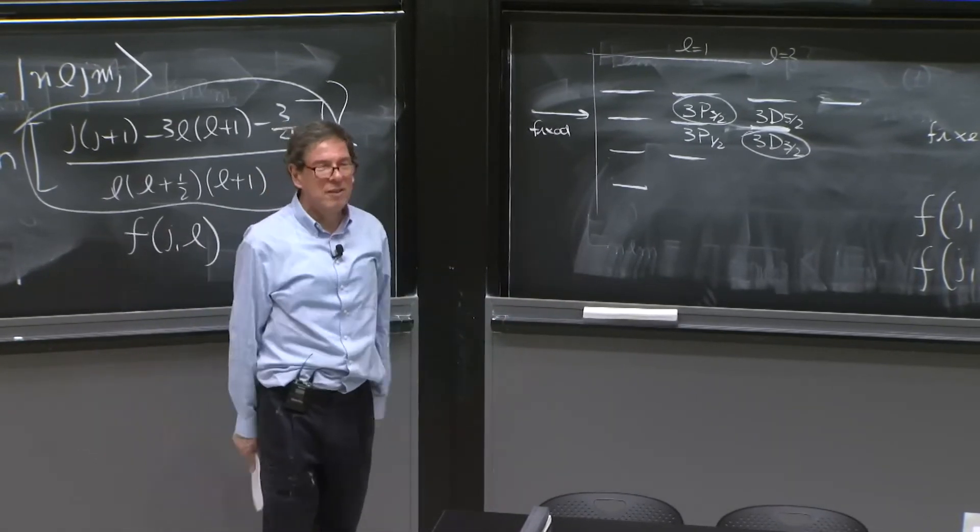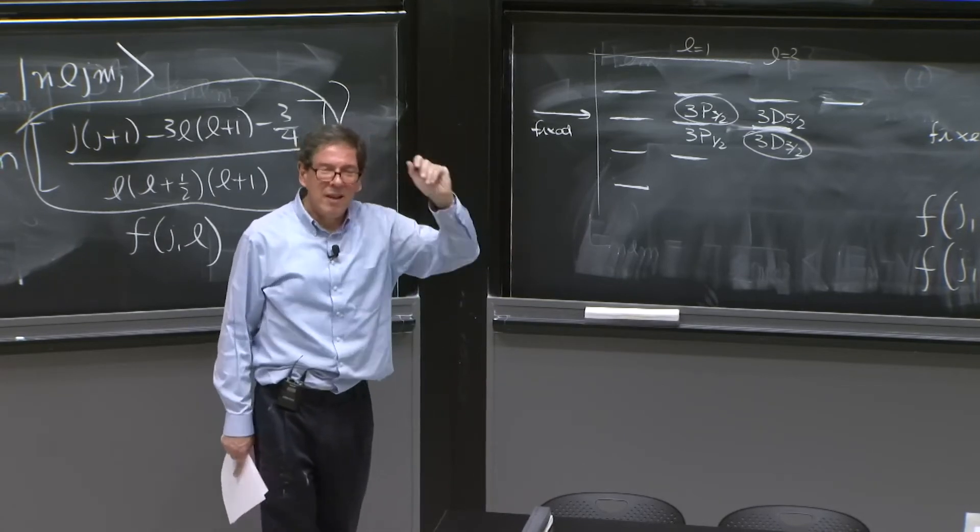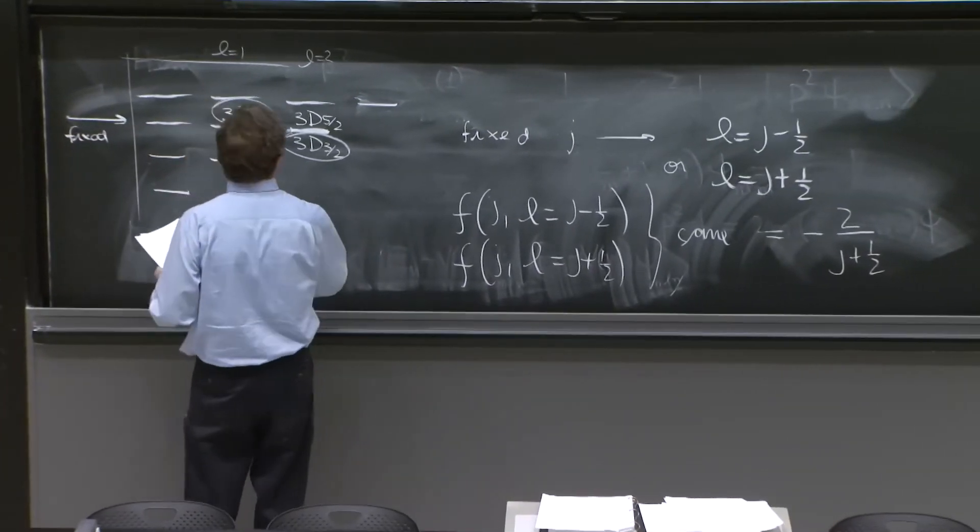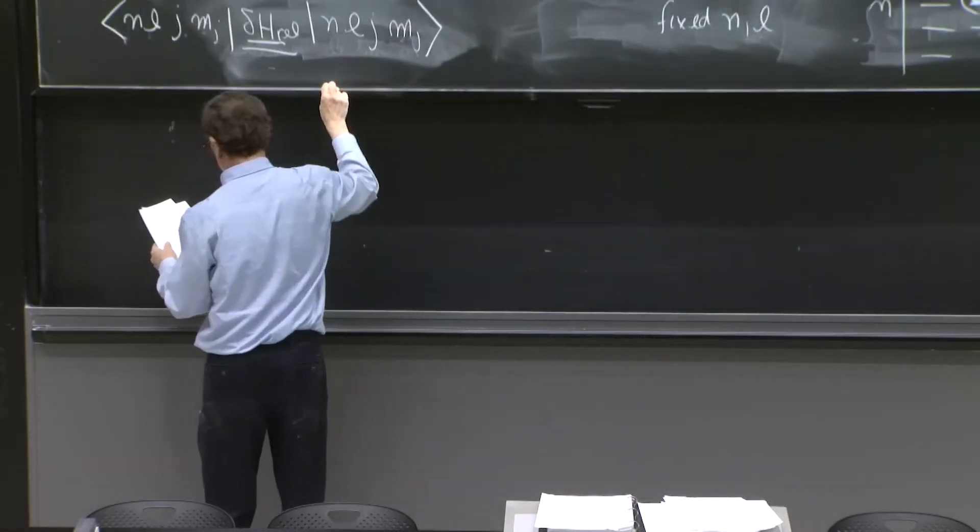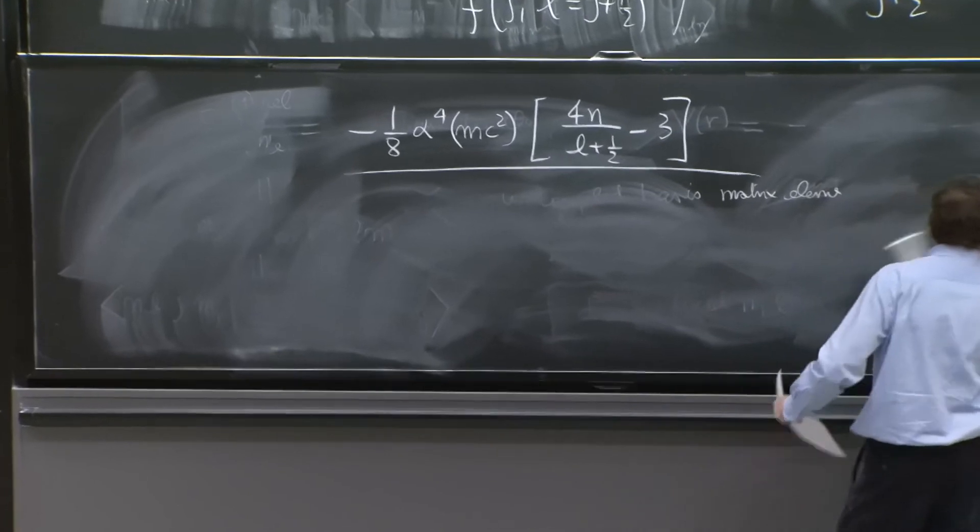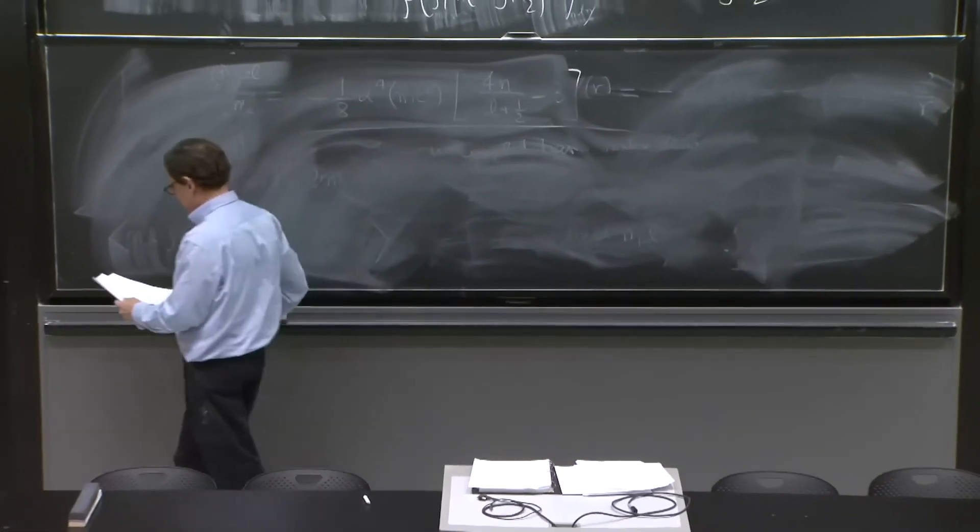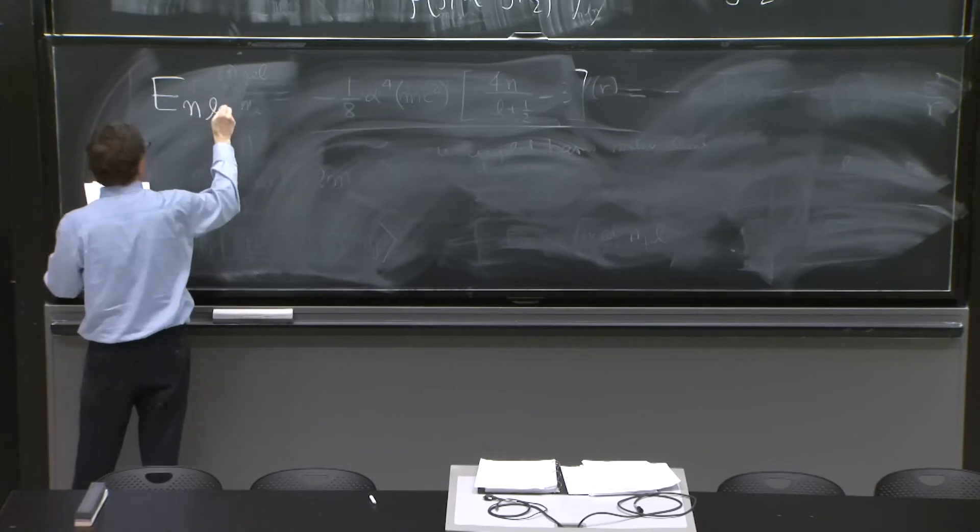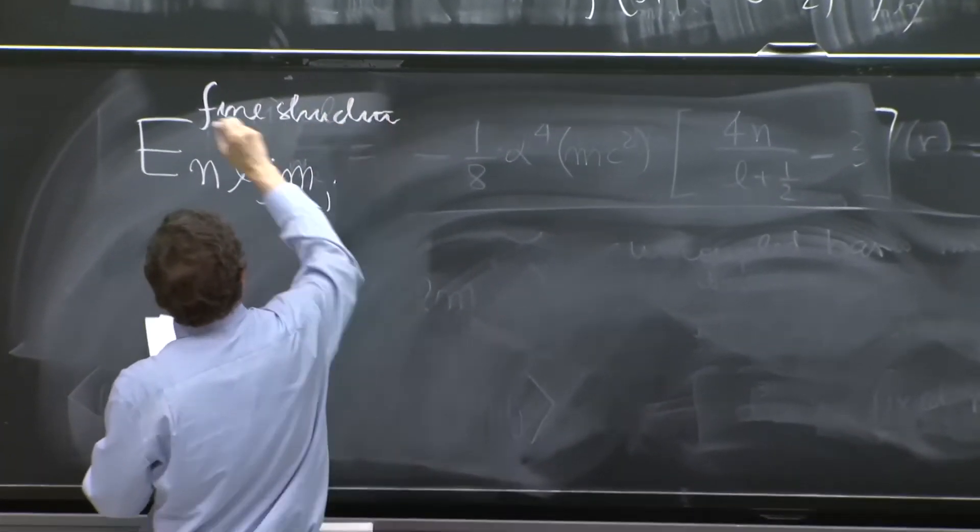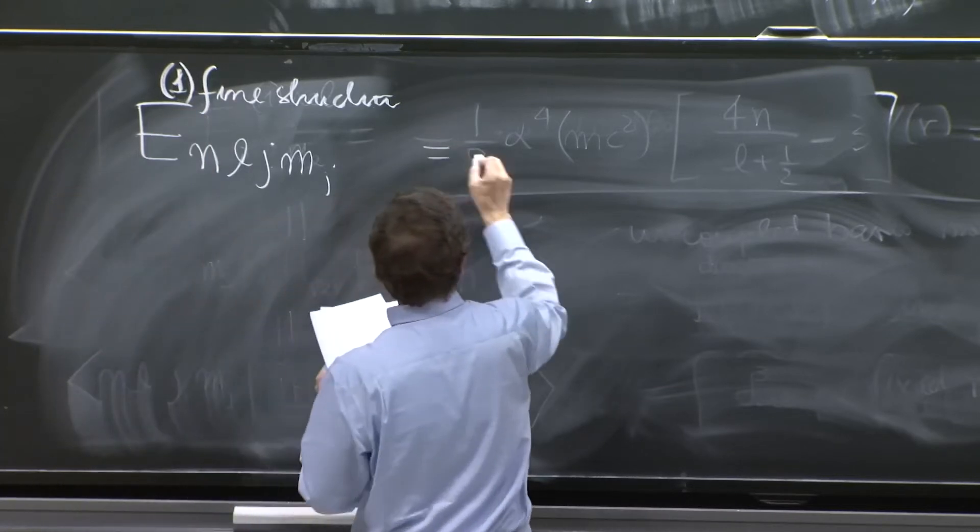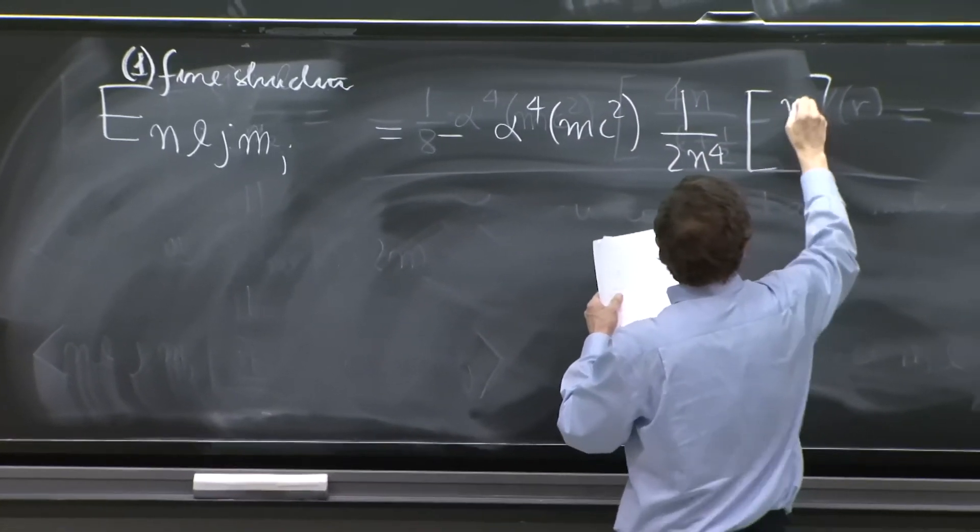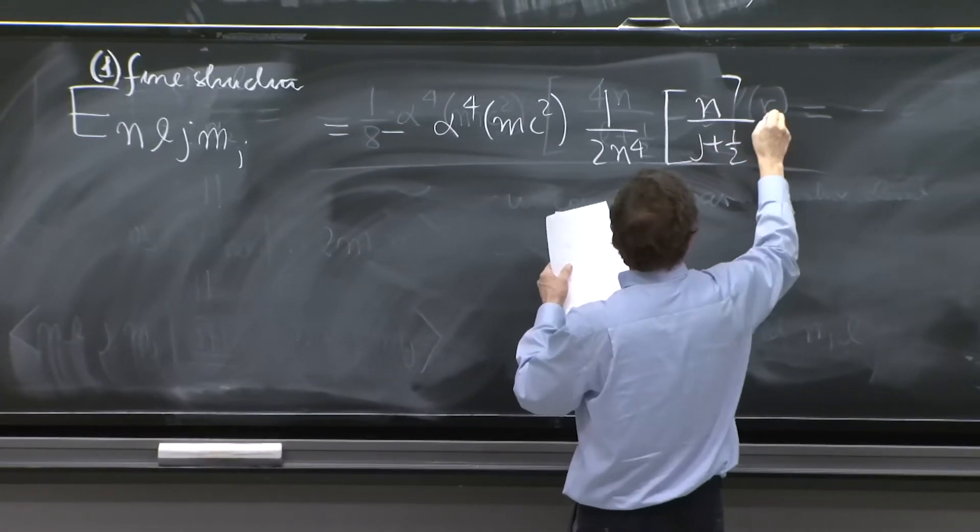The whole structure, once you put relativity, Darwin, and spin orbit, just depends on j. And what is the result when you simplify this? Our result is that the fine structure, E n l j mj fine structure 1 is equal to minus alpha to the fourth mc squared 1 over 2 n to the fourth n over j plus 1 half minus 3 quarters.